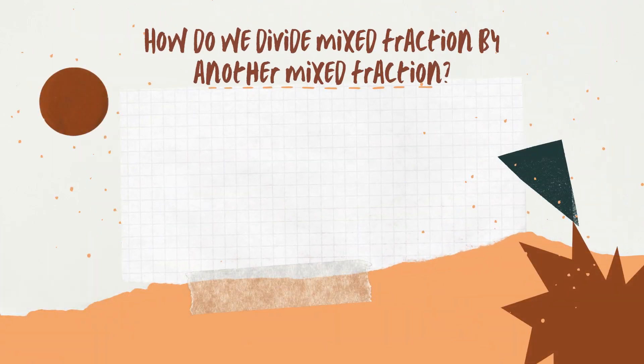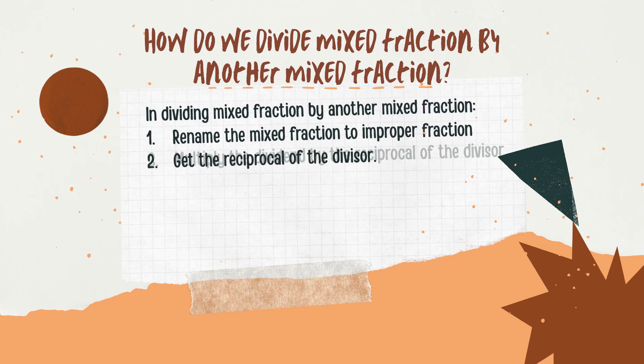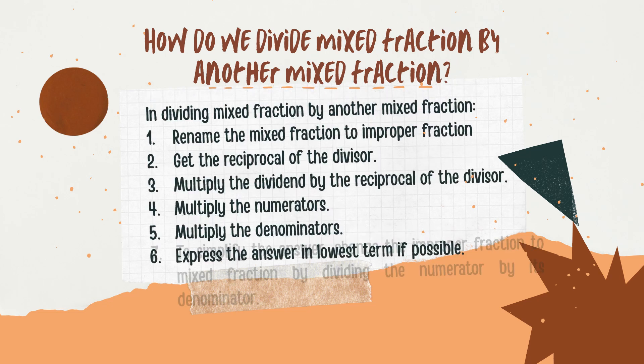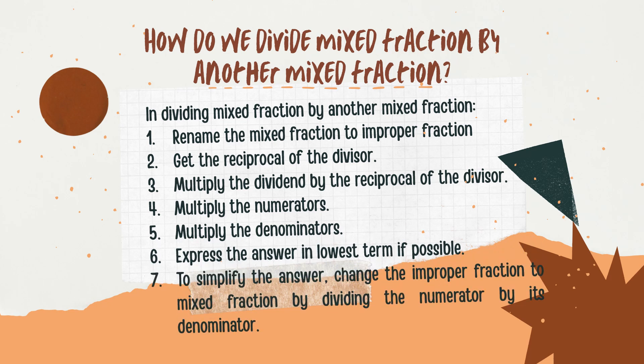How do we divide a mixed fraction by another mixed fraction? Rename the mixed fraction to an improper fraction. Get the reciprocal of the divisor. Multiply the dividend by the reciprocal of the divisor. Multiply the numerators and multiply the denominators. Express the answer in lowest terms if possible.